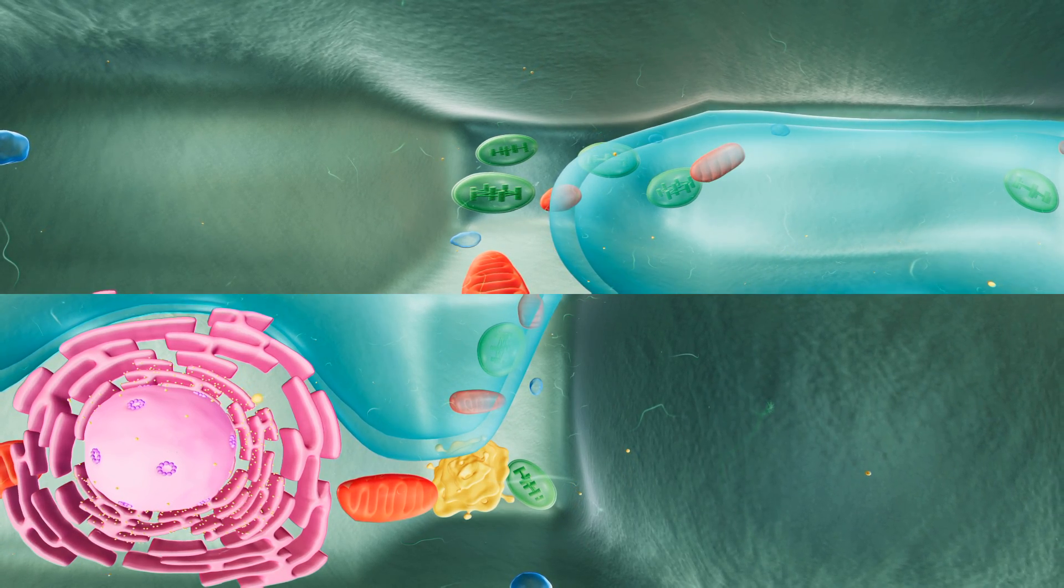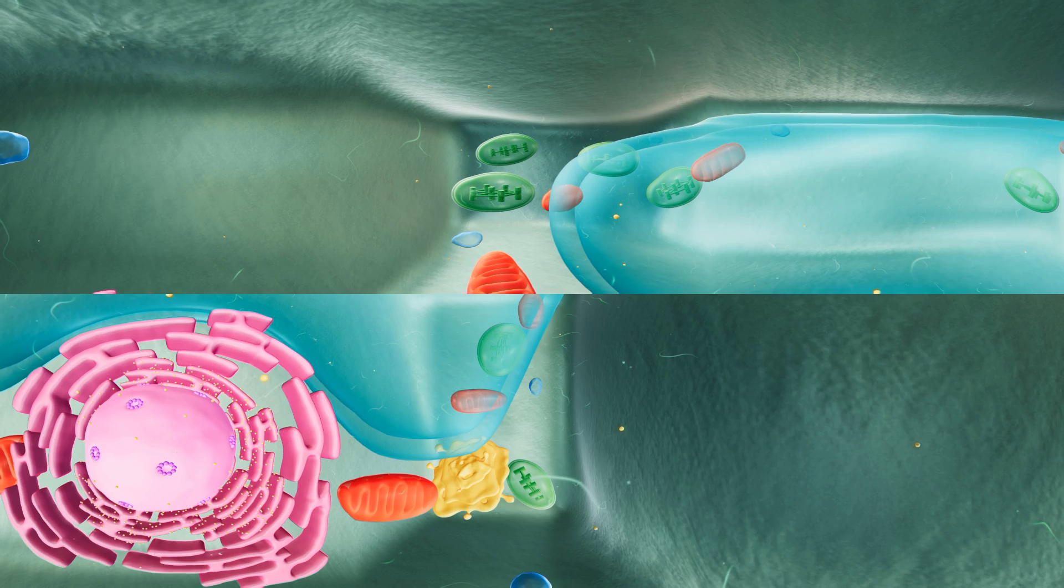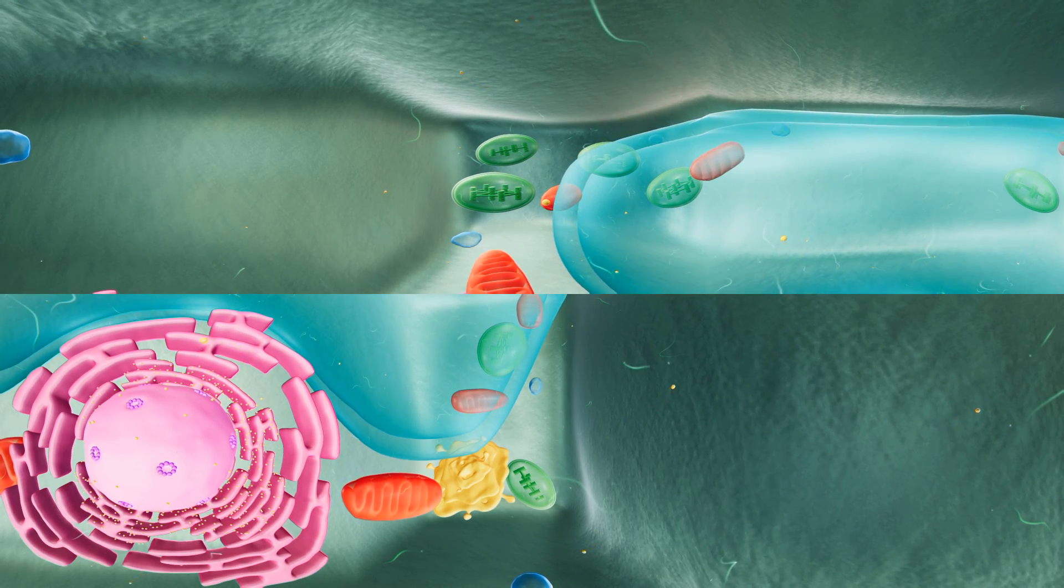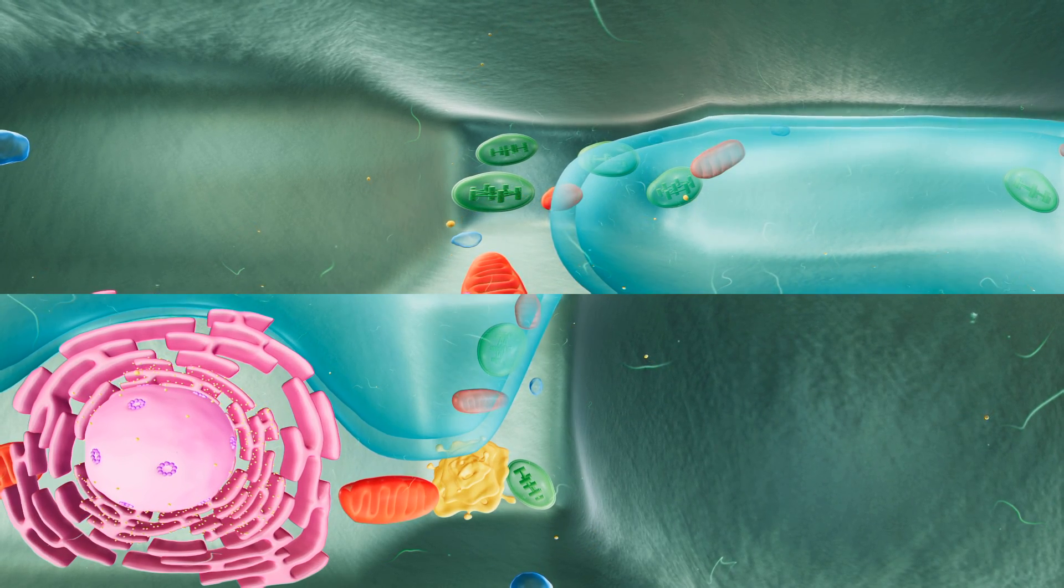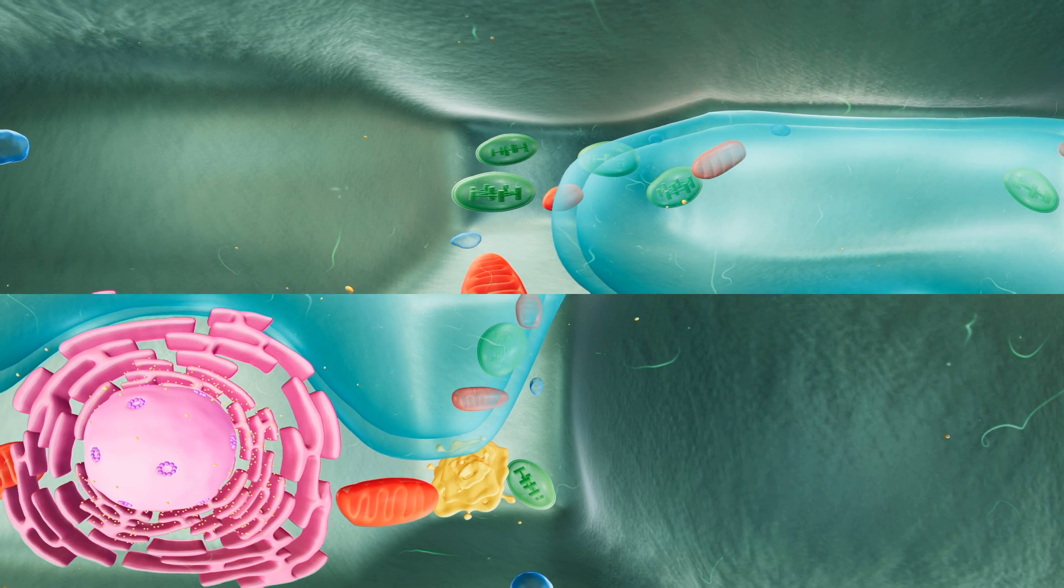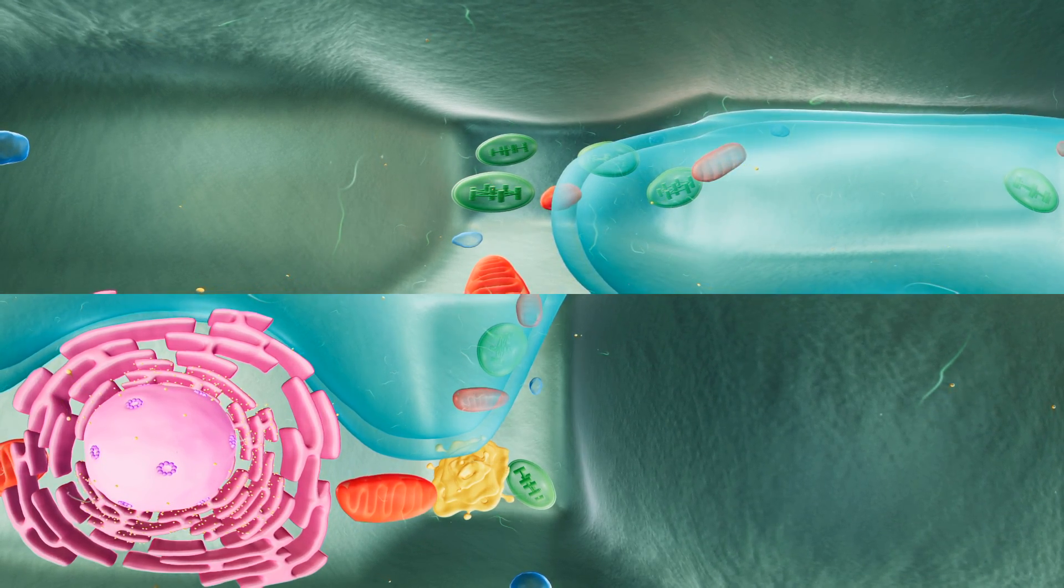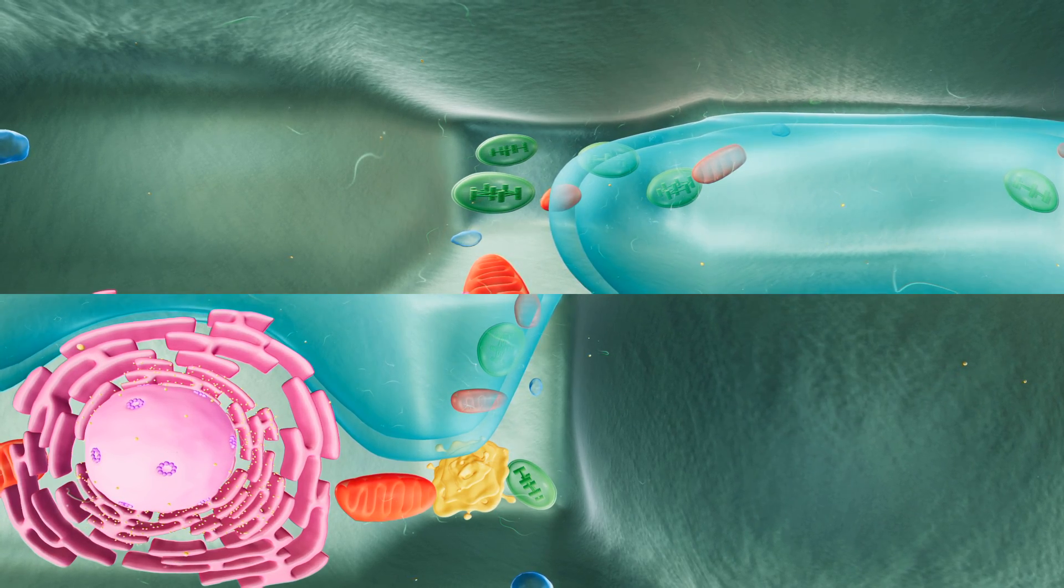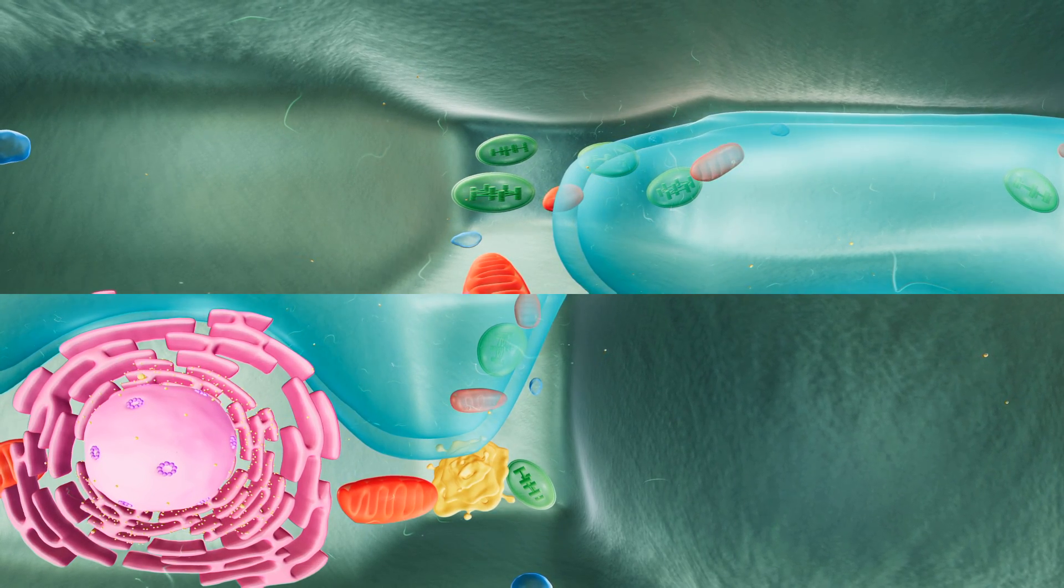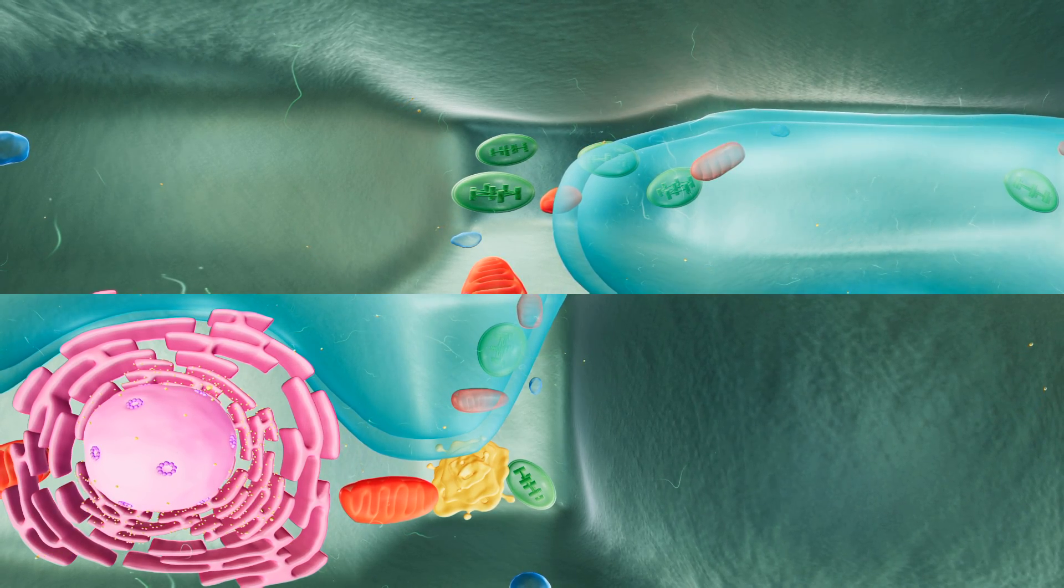The cell looks pretty familiar, doesn't it? It is quite similar to the eukaryotic cell, except there seems to be a very large vacuole in the center. It looks like we're surrounded by a wall, and there appear to be some new organelles around us. We're currently inside a eukaryotic plant cell.